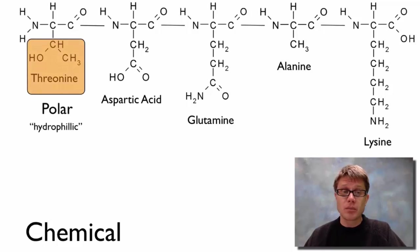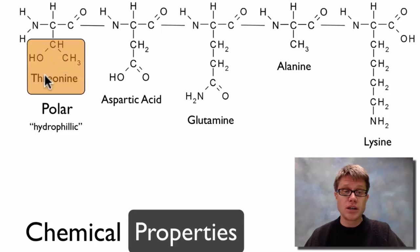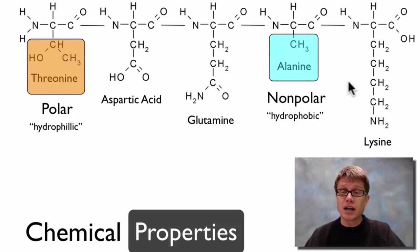These are each going to have different chemical properties. For example, this one right here, threonine, is going to be polar. What that means is it's going to have a charge. If we look at alanine right down the way, this is going to be nonpolar. So why is that important? Well, if you're polar, then you're hydrophilic. That means that water is going to be attracted to you. In other words, we're going to find threonine in the presence of water. But alanine, since it's got this methyl group right here, it's not going to be attracted to the water. And so it's going to hide from the water.